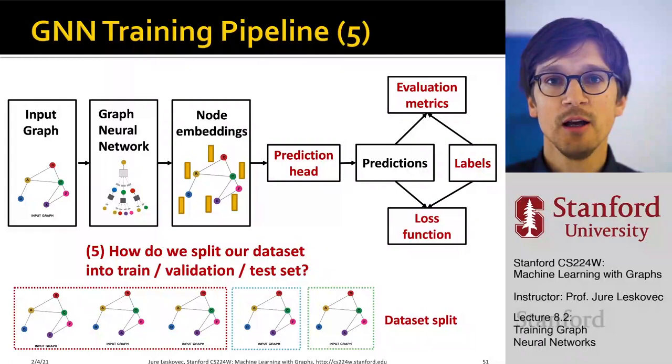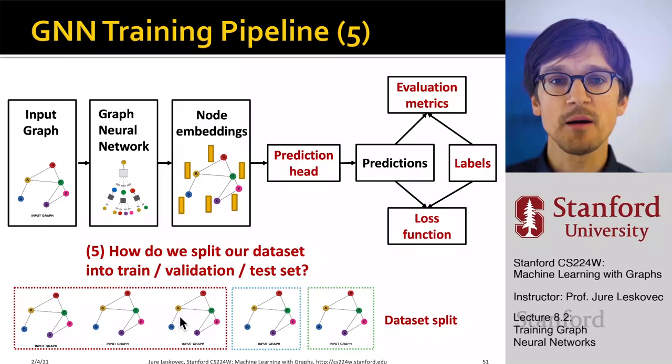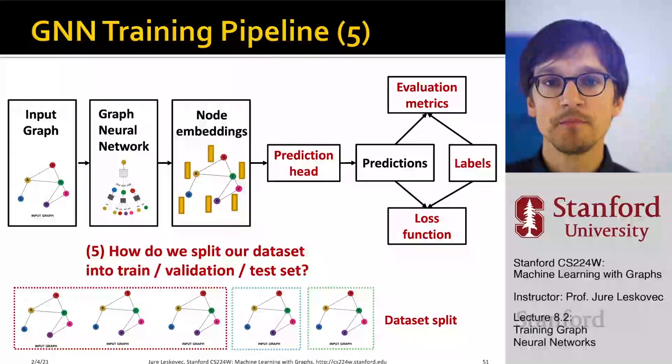To summarize today's lecture: we covered the GNN training pipeline—how to define prediction heads, where labels come from, what loss functions to use, and how to measure performance with evaluation metrics. Next week we'll discuss how to set up training datasets: how to split data between training, validation, and test sets to enable efficient training and good results.